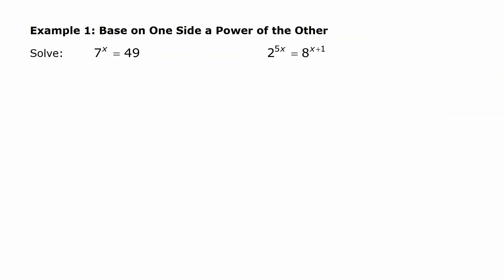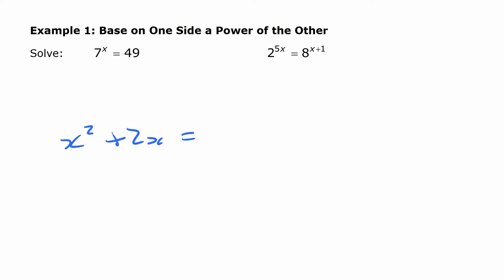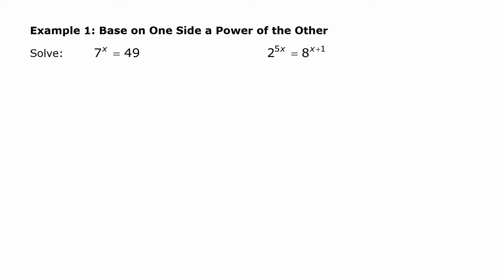So we have a couple of examples to start with, and the first one you can probably solve just by looking at it. It says 7 to the power of x equals 49. The reason this is an exponential equation is because the variable is in the exponent. You may have solved equations that have exponents, but where the variable isn't involved — that doesn't make it an exponential equation. Here, the variable is in the exponent.